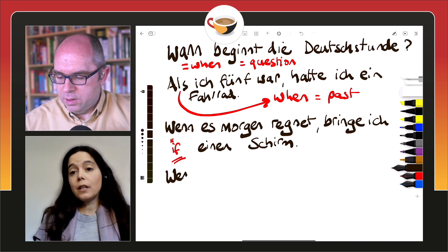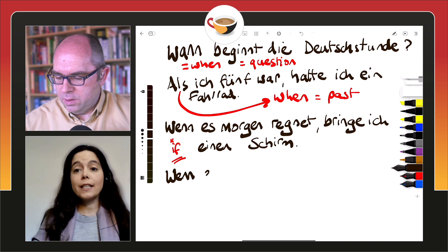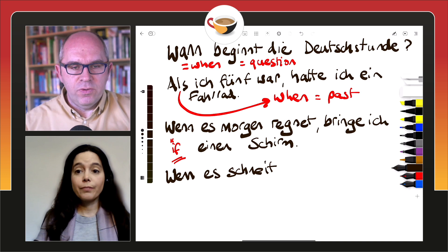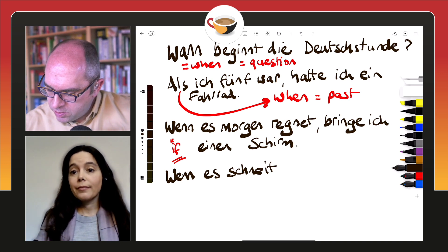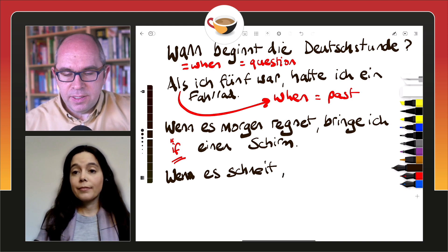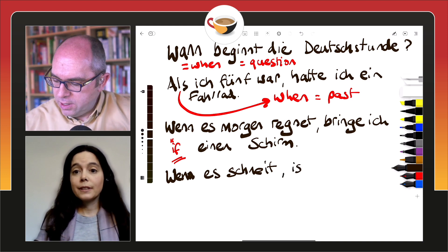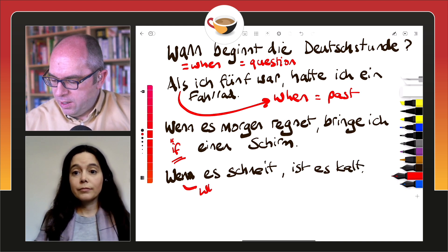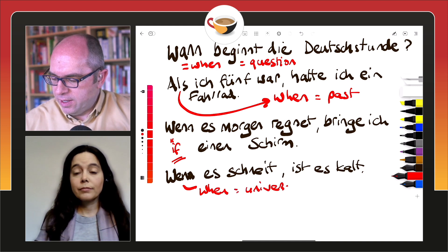We can also use wenn as 'when' for things that always happen or universal truths. For example, wenn es schneit, ist es kalt — when it snows, it's cold. So that's a universal truth kind of idea.